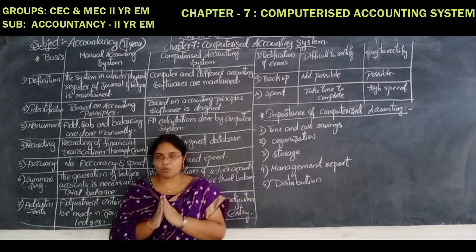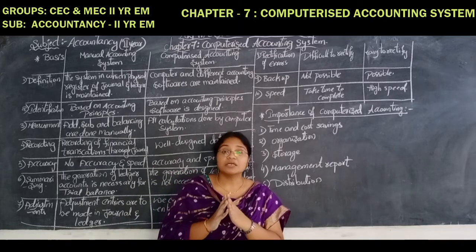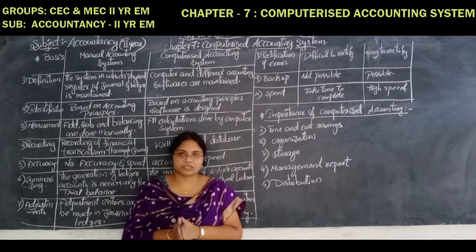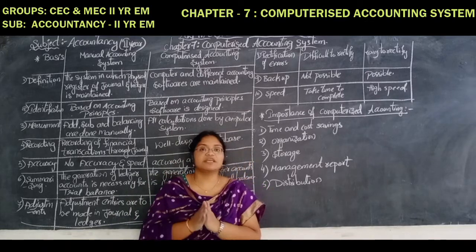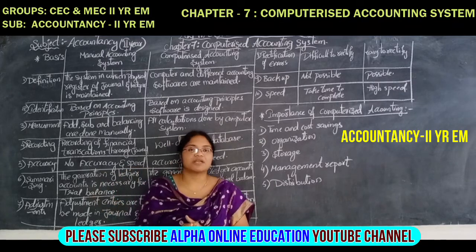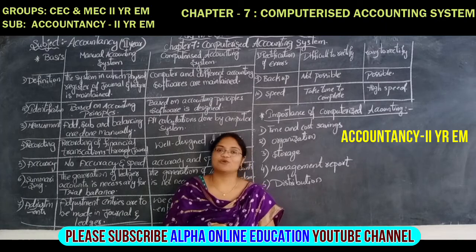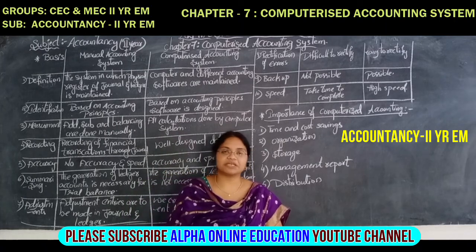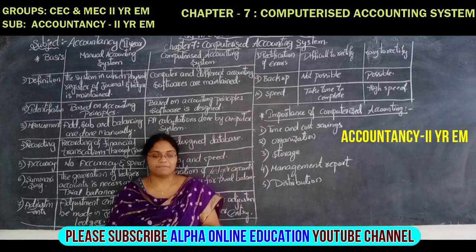These are the four most important questions of the computerized accounting system. Among these four, in your examination any two will be asked. The difference between computerized accounting and manual accounting is very surely going to be asked, and one more also. We have to study these four questions so that you can get good marks in your accounts.